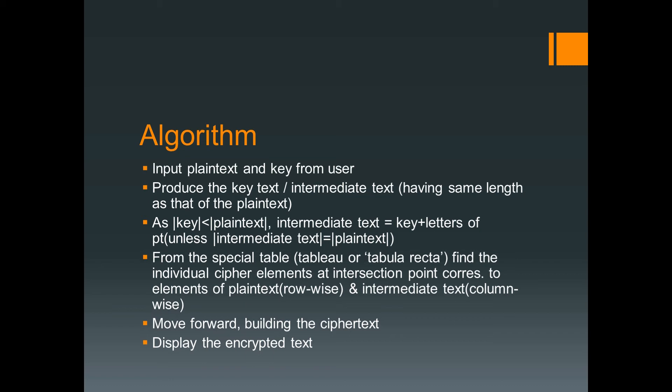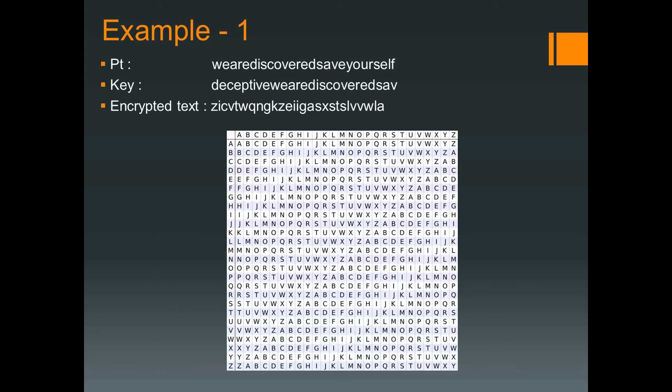After forming the intermediate text, you will have to use the special table as we did in the previous cipher — the tableau or the tabula recta. From the individual cipher elements, find the intersection points corresponding to the plain text row-wise and the intermediate text column-wise. The rules are very similar to the polyalphabetic cipher; the only basic difference is how the intermediate text is formed. After getting each cipher element, coordinate them to build up the cipher text, and finally display the encrypted text.